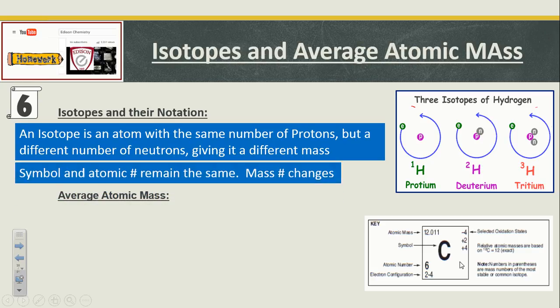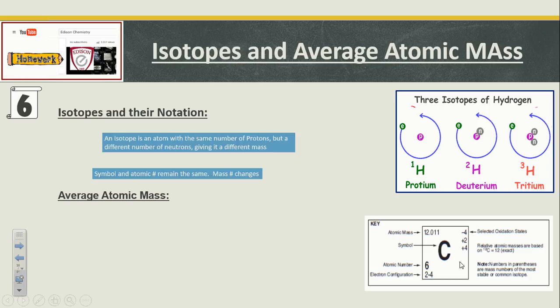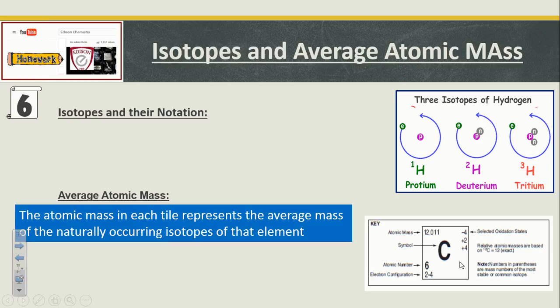The symbol and atomic number always remain the same, but the mass changes. An average atomic mass, by definition, is the mass of the average of the naturally occurring isotopes of that element. As you can see here with carbon, the average atomic mass has a decimal value.